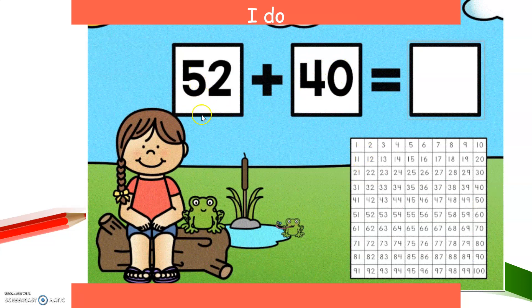If this number was 30 plus 19, then I will start with 19 because 19 has nine ones and 30 has zero. So any number that has more than zero ones, that's the number I'm going to start with. So I'm going to look for 52. There it is.